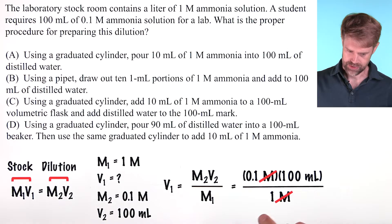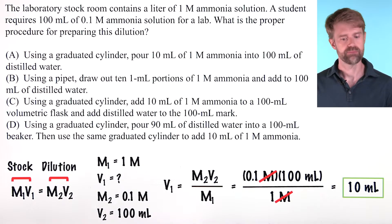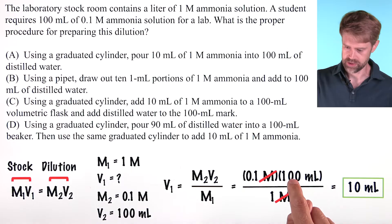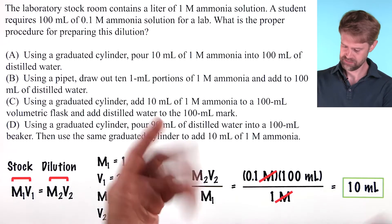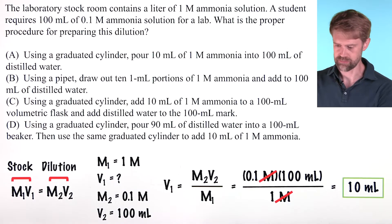Molar cancels molar, leaving you with units of milliliters, so we know that we set the math up correctly, and the math is pretty easy. You don't even need a calculator. 0.1 times 100, just shift the decimal place over 1 to the left, that gives us 10, and 10 divided by 1 is just 10. And remember, the units are milliliters.